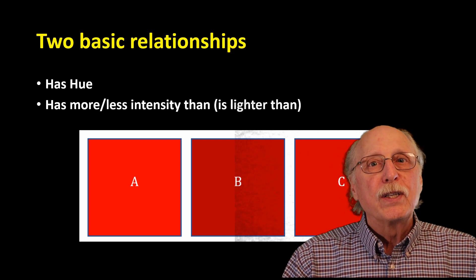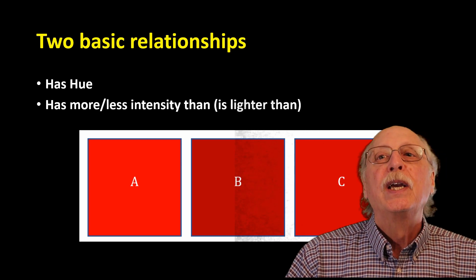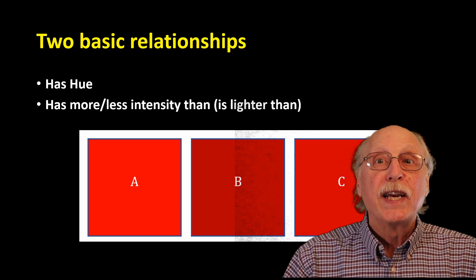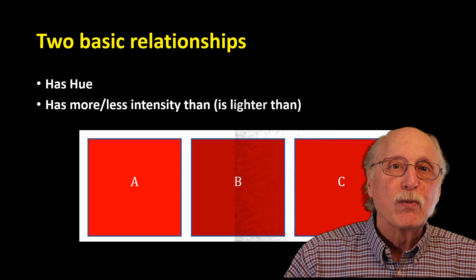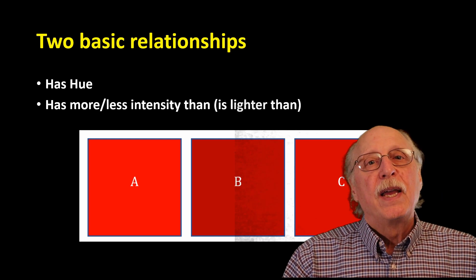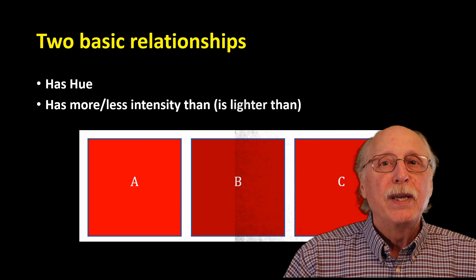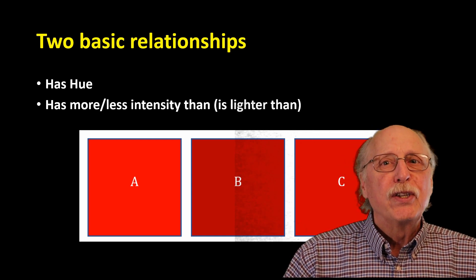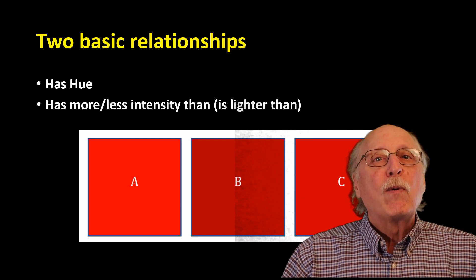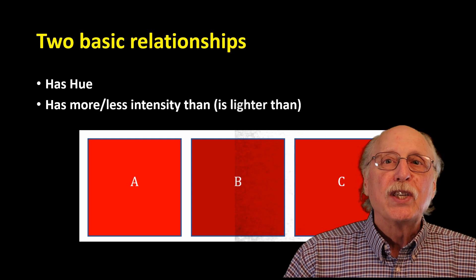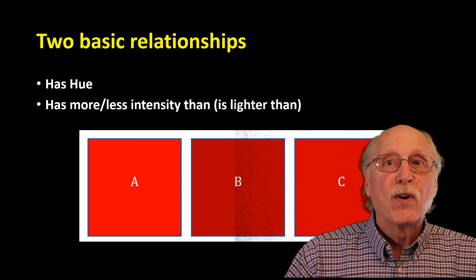We're only going to consider just two very basic relationships. A is red, so it has a hue or color which is a more or less absolute relationship. And A is more intense or brighter than B. This relationship is only meaningful in comparing objects of similar types. Likewise, B has the same hue as A and C, but it is not as bright as A or C.